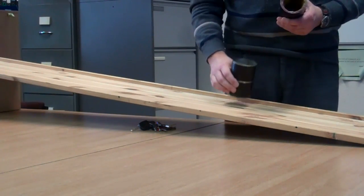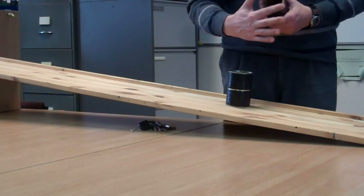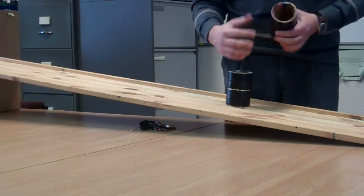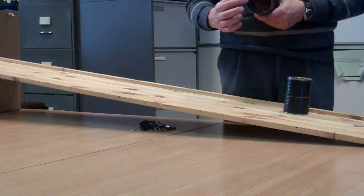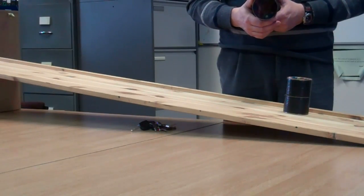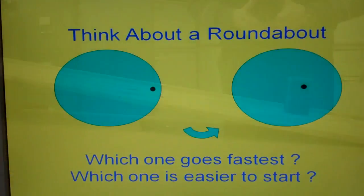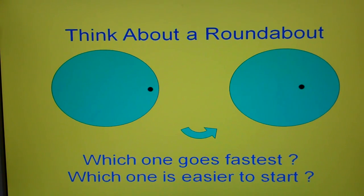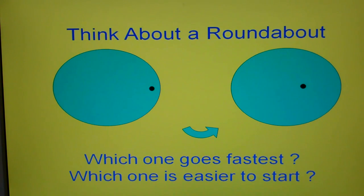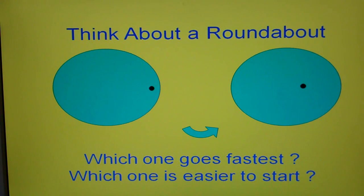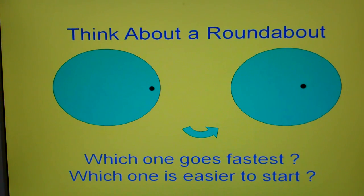What we need to think about next is why the one with the mass around the outside rolls more slowly than the one with a solid mass. To explain the motion of the cans, think about two roundabouts with two identical children sitting on them, represented as black dots — one near the outside and one nearer to the centre. The roundabouts are made to rotate at the same rate.